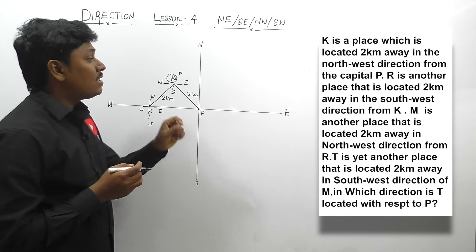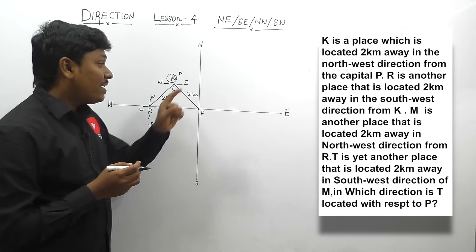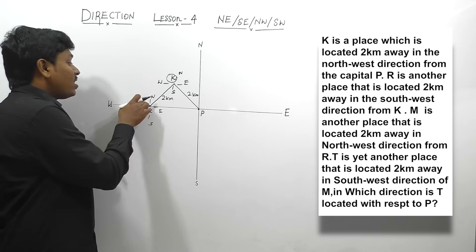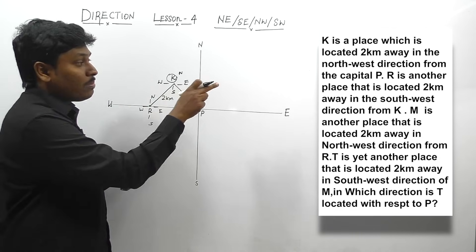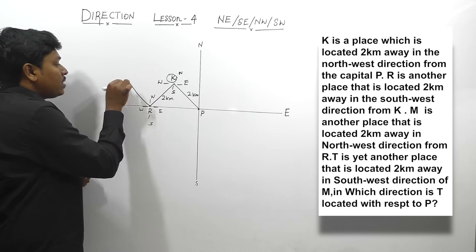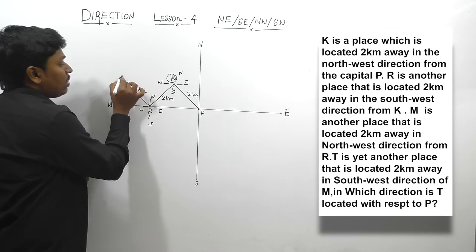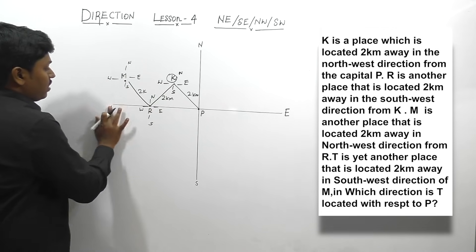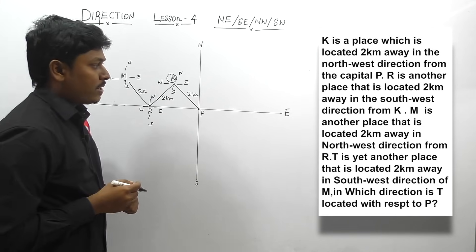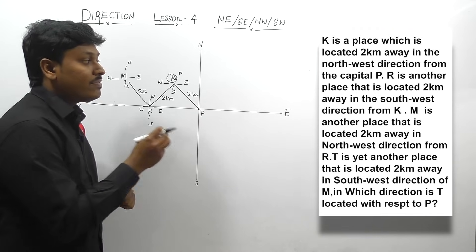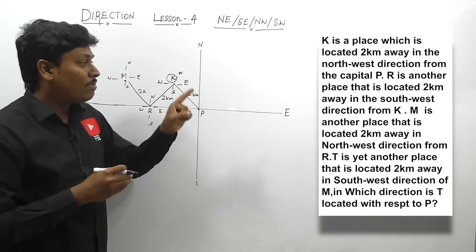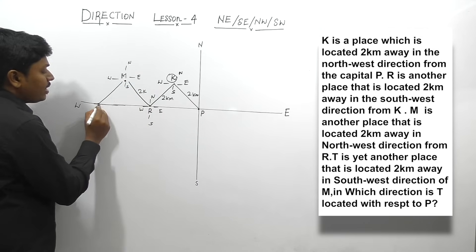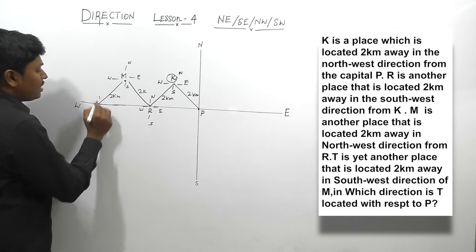M is another place located 2 km away in north-west direction from R. From R, north-west direction at 2 km, M is located. North-west will be this side, at 2 km, M is located — both lines should be the same. T is another place located 2 km away in south-west direction from M. From M, south-west at 2 km, T is located. This is also 2 km and this is also 2 km, so T is located here.